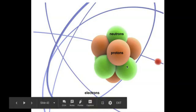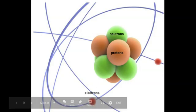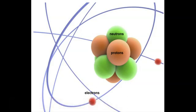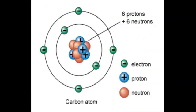Surrounding the nucleus of the atom are what we call the electrons. The electrons are the negatively charged particles that are very, very tiny and their masses are negligible. The electrons are moving around the nucleus of the atom and they are in an atomic orbital.